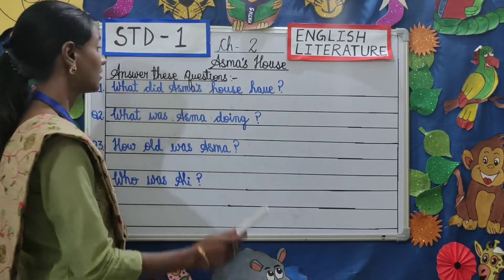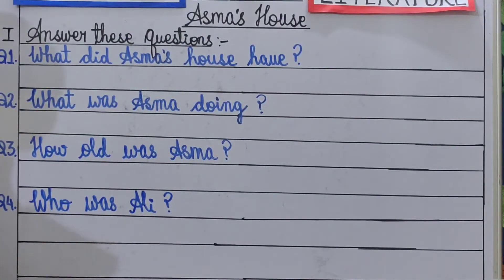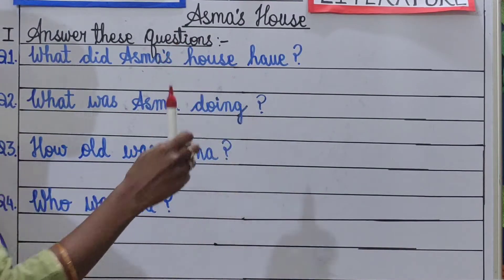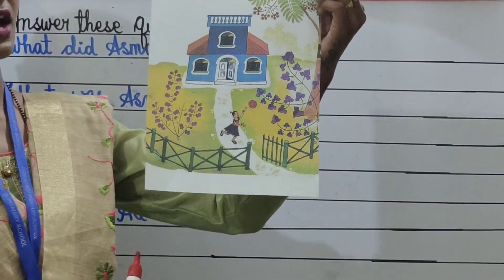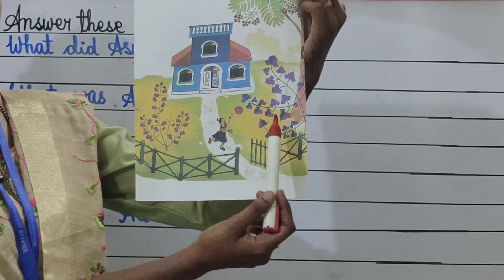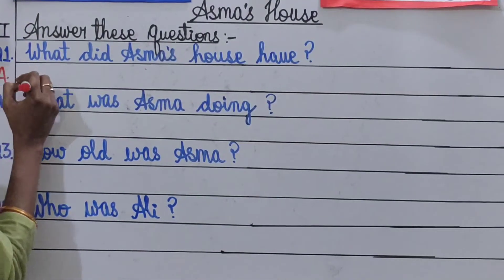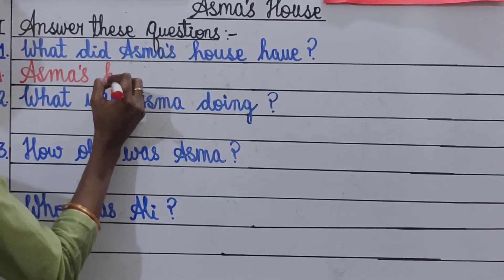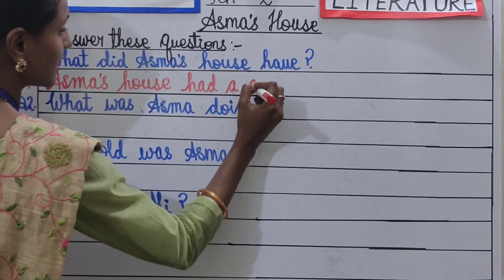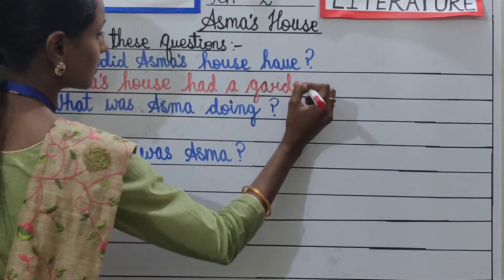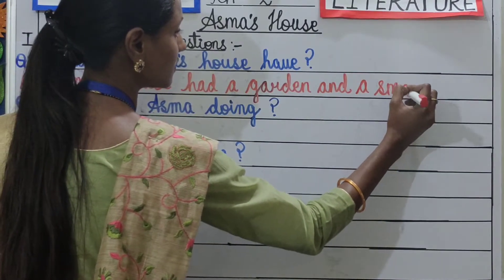Let's see our first question. Question number 1: Answer these questions. What did Asma's house have? To answer this question, let's see this picture children. Asma's house had a small gate and a garden. Let's write the answer. Asma's house had a garden and a small gate.